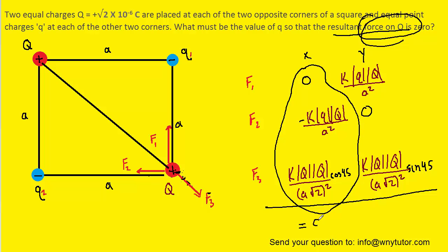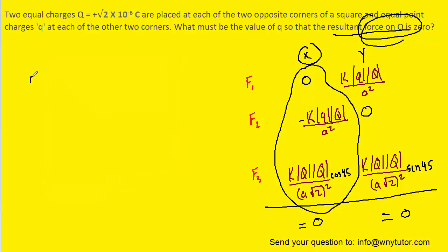What that means is if we add the X components together of the forces, that should equal zero. And the same is true for the Y components. If we add those components together, that should also equal zero. Why don't we choose the X components first and see where we get. So we'll come over here. We'll take the first X component, which is zero.